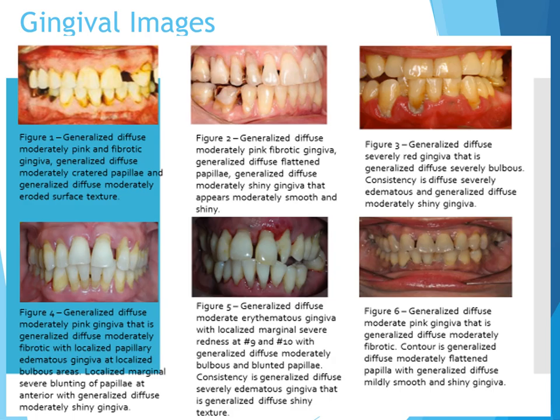In figure three, we see generalized diffuse, severely red gingiva that is generalized diffuse, severely bulbous. The consistency is diffuse, severely edematous, and generalized diffuse, moderately shiny. In figure four, we see generalized diffuse, moderately pink gingiva that is generalized diffuse, moderately fibrotic, with localized papillary edematous gingiva at localized bulbous areas.